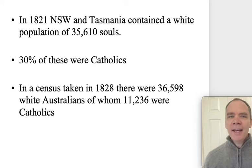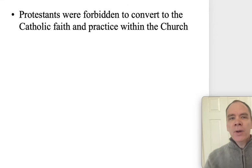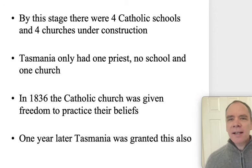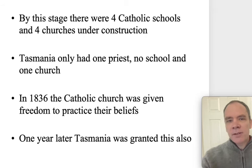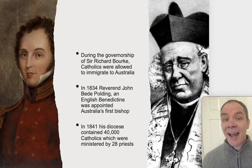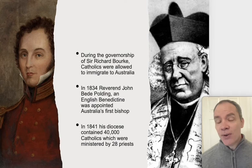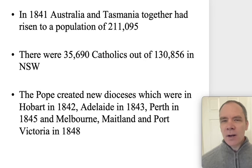The period of partial toleration: in 1821, New South Wales and Tasmania contained a white population of 35,610 people, 30% of them Catholic. A census taken in 1828 showed about 36,000 white Australians, of whom about 11,000 were Catholic. Protestants were forbidden from joining the Catholic church. By this stage there were four Catholic schools and four churches under construction; Tasmania had only one priest, no school, and one church. In 1836, the Catholic Church was given freedom to practice their beliefs openly, and Tasmania was granted this one year later. During the governorship of Sir Richard Bourke, Catholics were allowed to immigrate to Australia. In 1834, Reverend John B. Polding, an English Benedictine, was appointed Australia's first Catholic bishop. By 1841, the diocese contained 30,000 Catholics ministered by 28 priests.